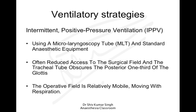Another way is to perform intermittent positive pressure ventilation as we are used to, but in this case instead of using a normal standard tube, we use a microlaryngeal tube, which is smaller in size — usually 5.5 to 6 millimeters. The anesthesia equipment required is standard equipment.